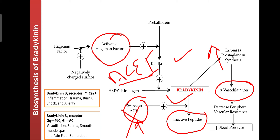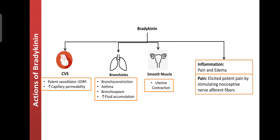Bradykinin mainly acts on the cardiovascular system as a potent vasodilator by releasing EDRF, nitric oxide, and PGI2, causing vasodilation in arterioles that decreases blood pressure — helpful for treatment of hypertension. It also enhances capillary permeability, causing angioedema — swelling of the blood vessels.